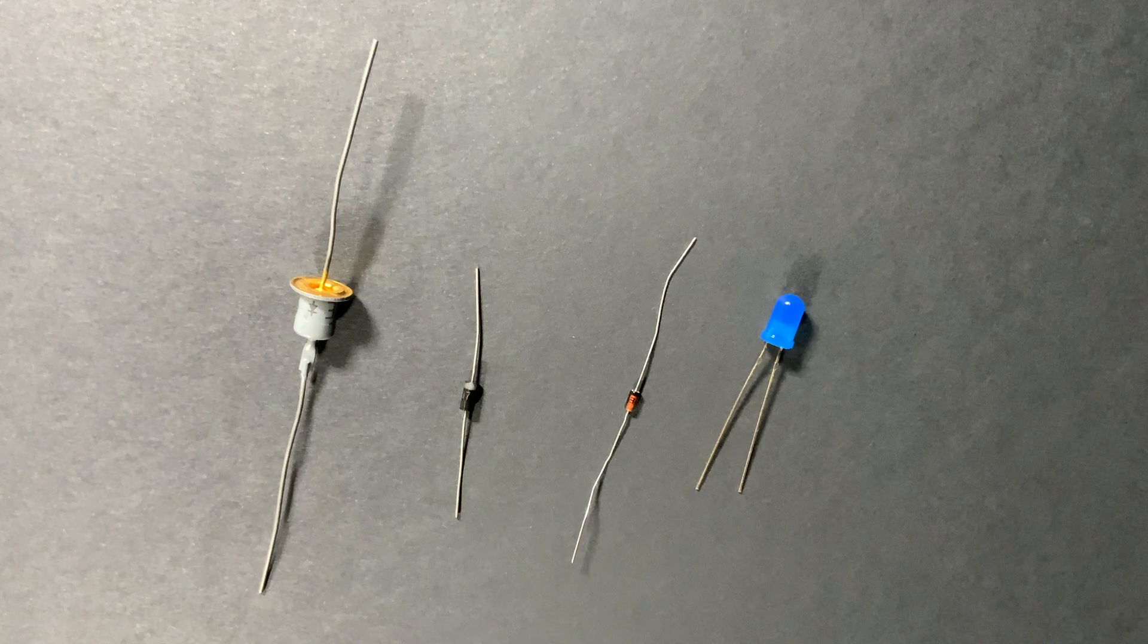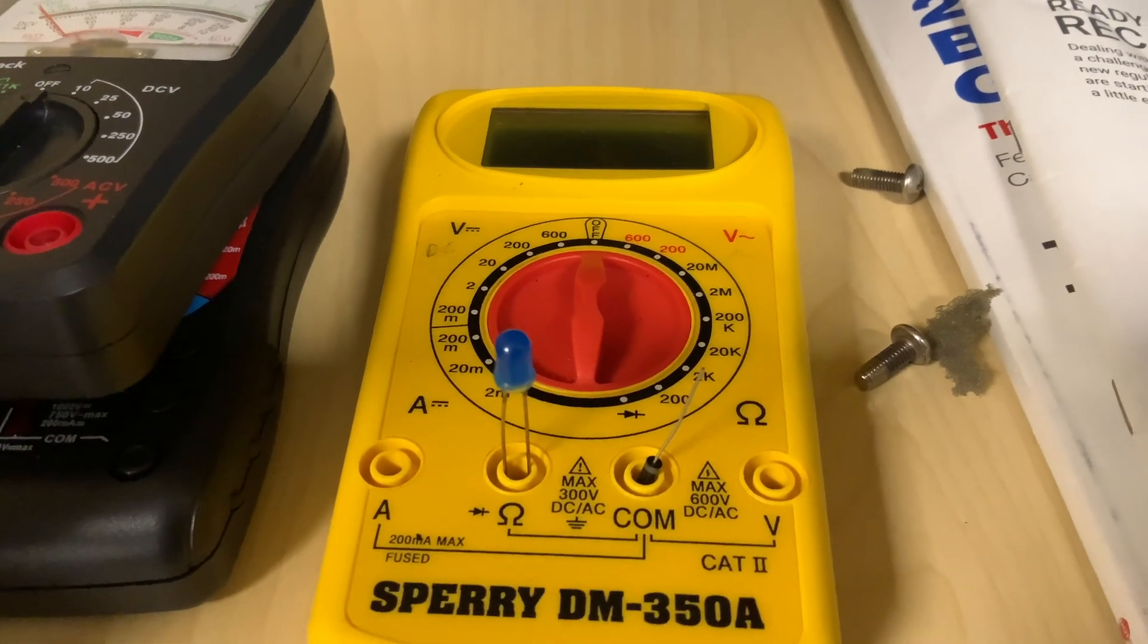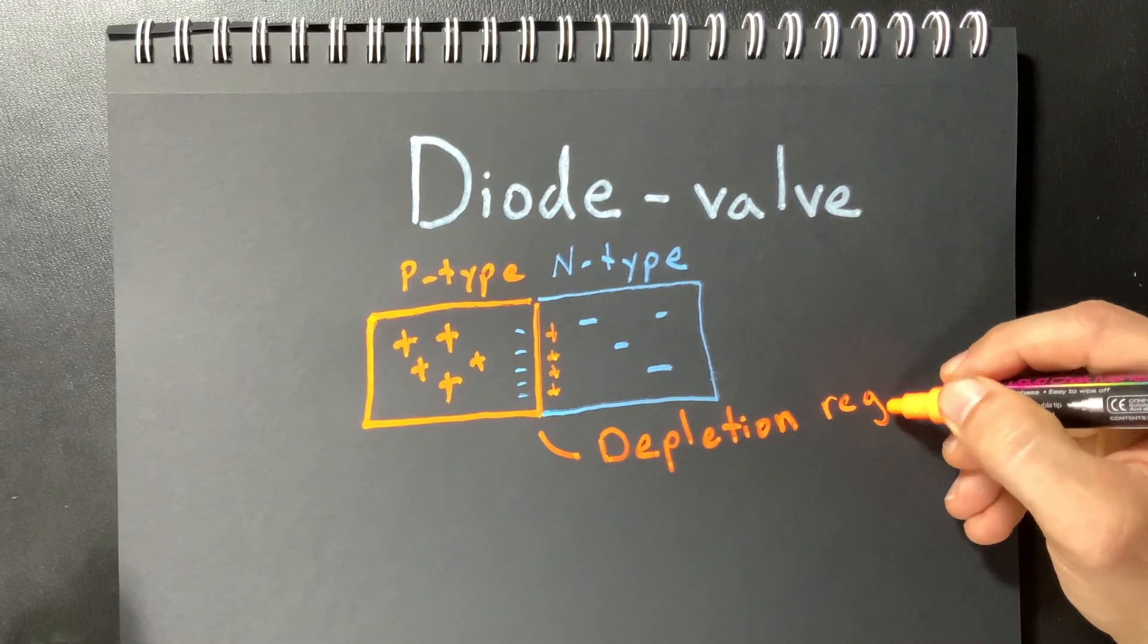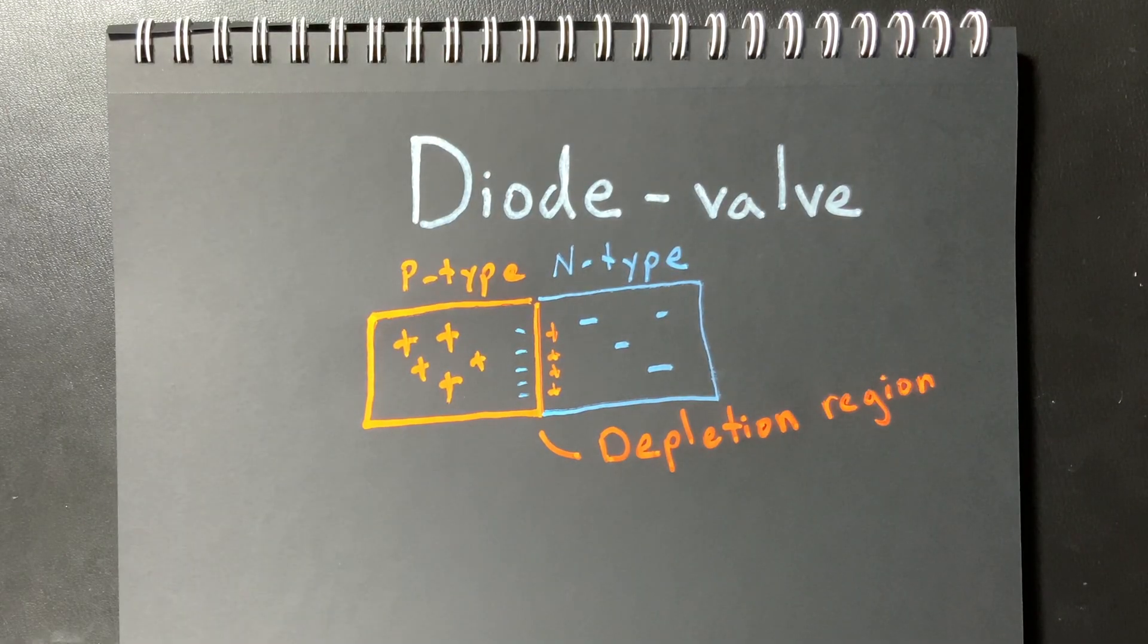In this video you're going to learn how to test diodes. First I'm going to show you how not to test diodes. Then we're going to talk about what a diode is so that we can come up with a way to test it.